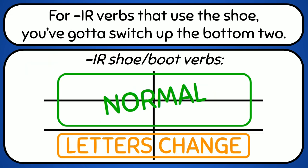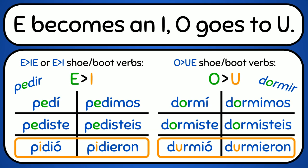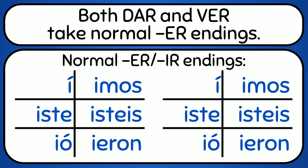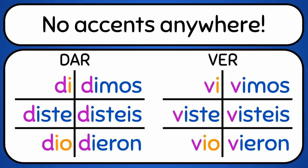For -ir verbs that use the shoe, you gotta switch up the bottom too. I becomes an I, O goes to U. But this can't affect the yo or tú. That is what we do. Both are in bed. Take normal -ar endings, no accents anywhere.